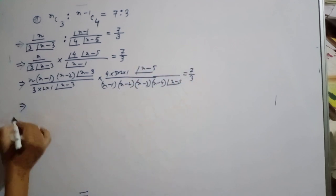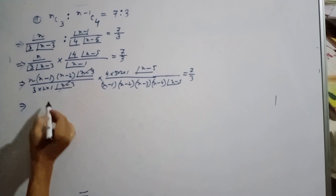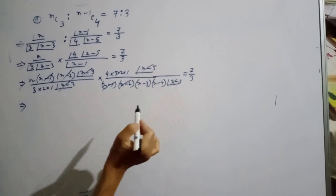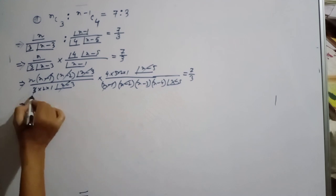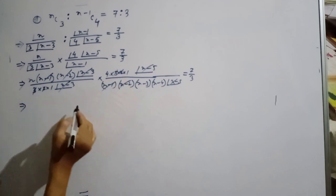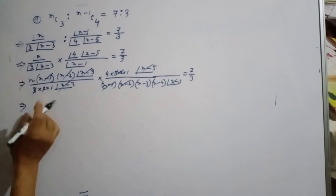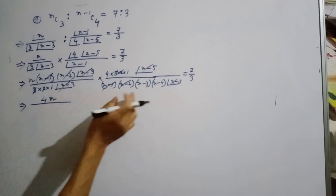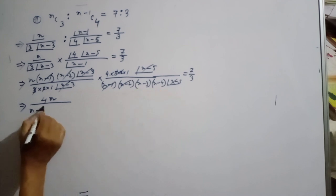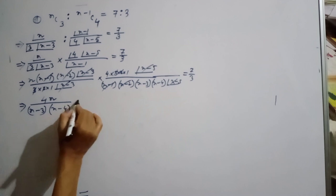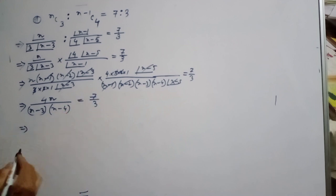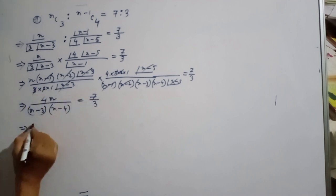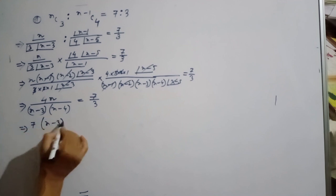Cancelling common terms: (n-1) and (n-1) cancel, (n-2) and (n-2) cancel, (n-5) and (n-5) cancel, and 3 and 2 cancel, leaving us with the simplified ratio equal to 7 by 3.